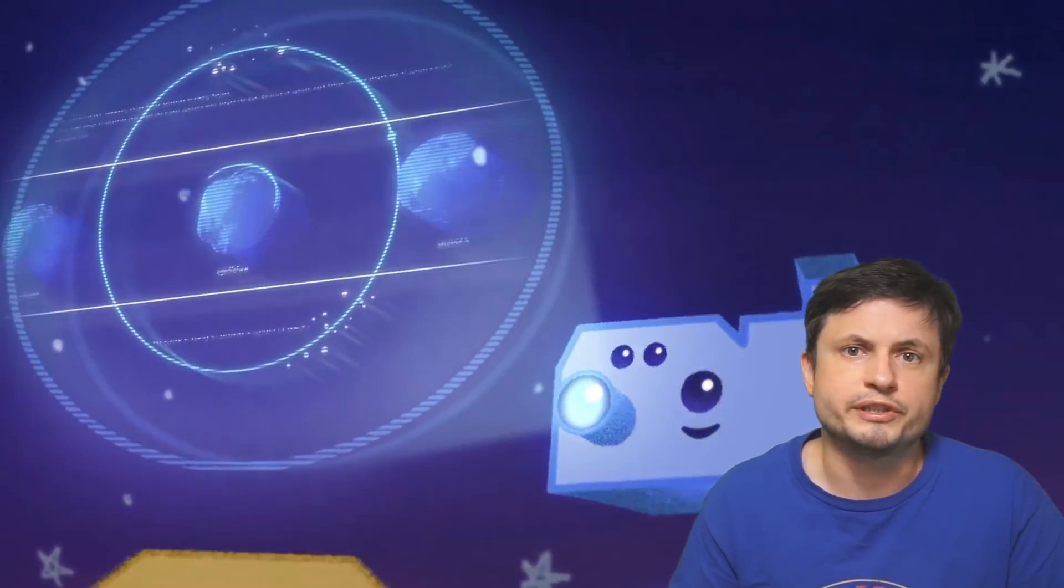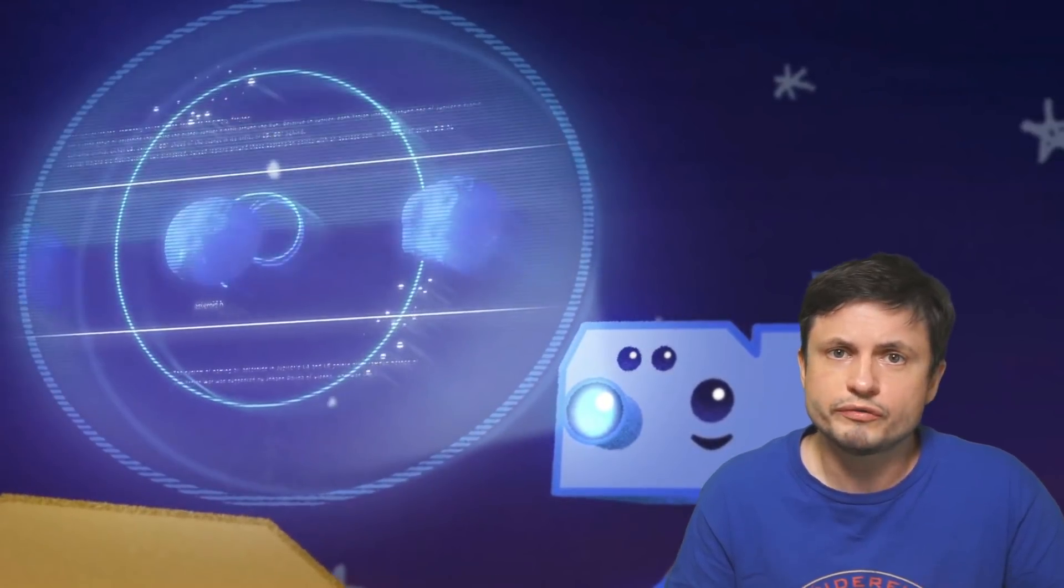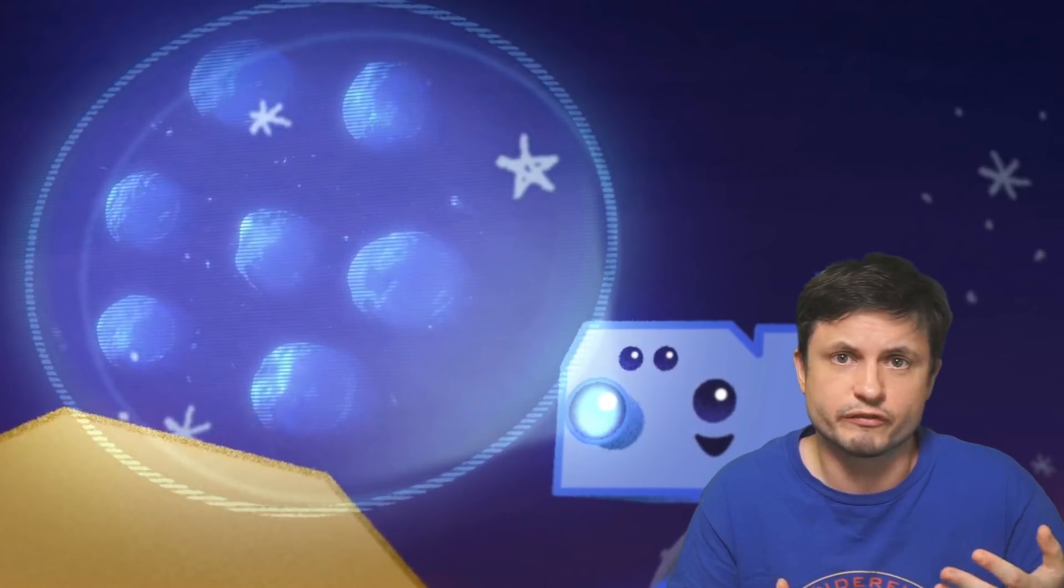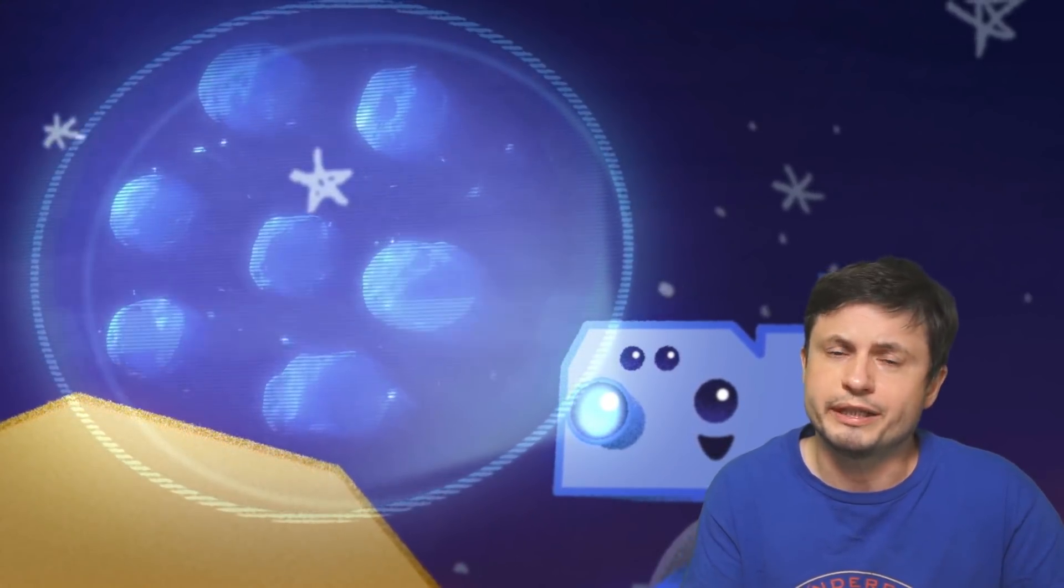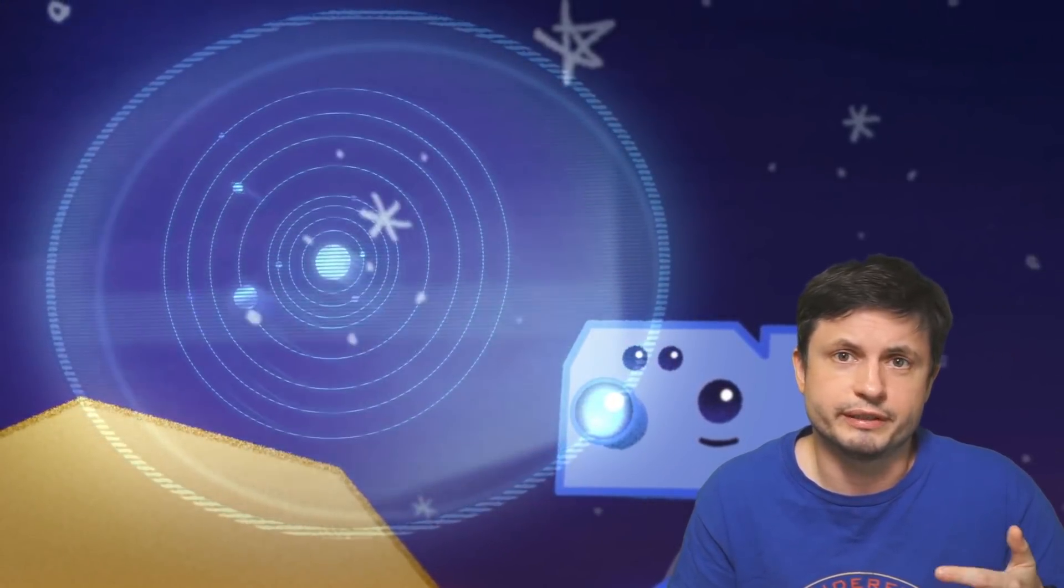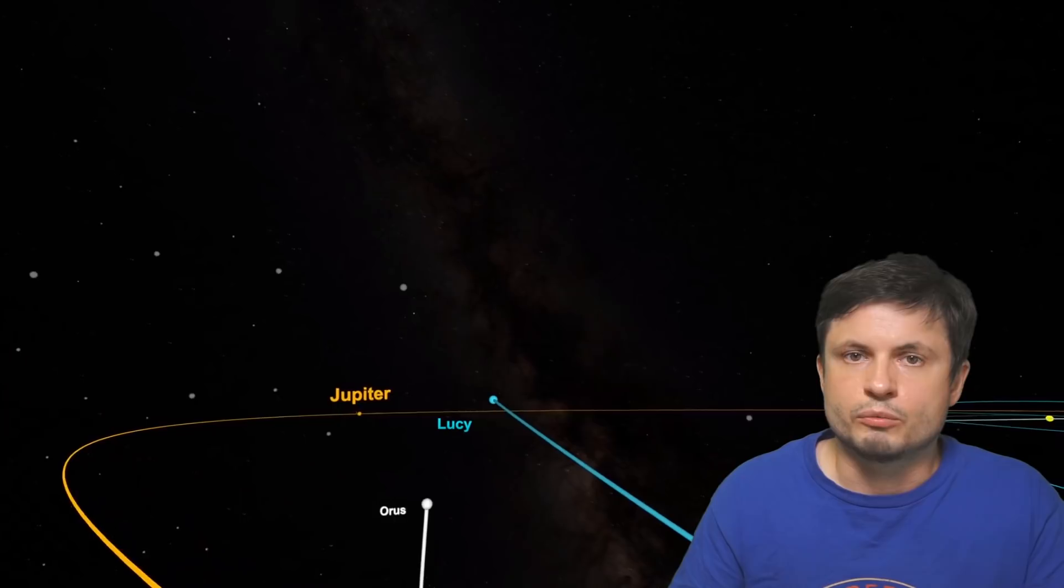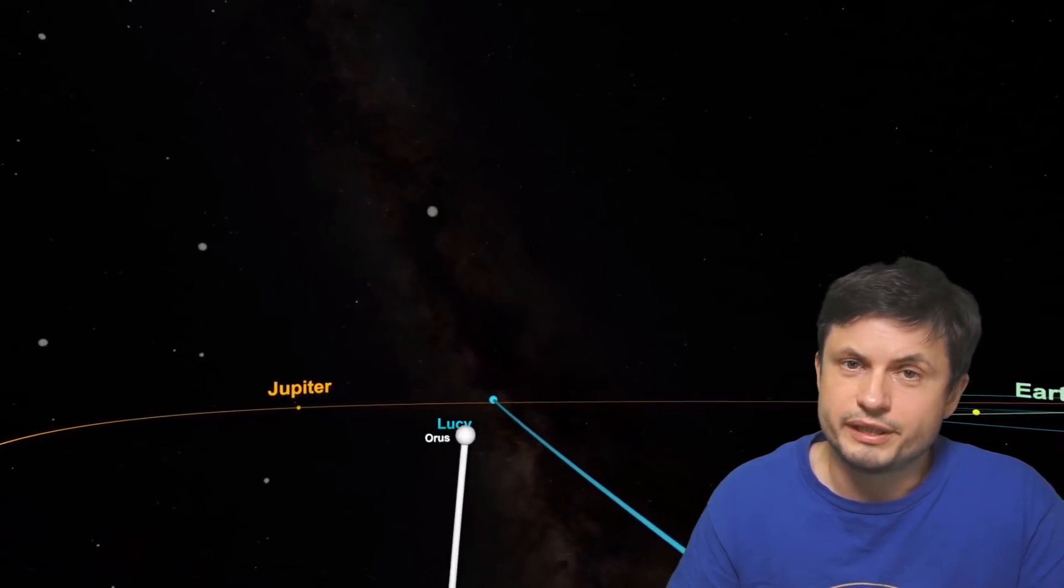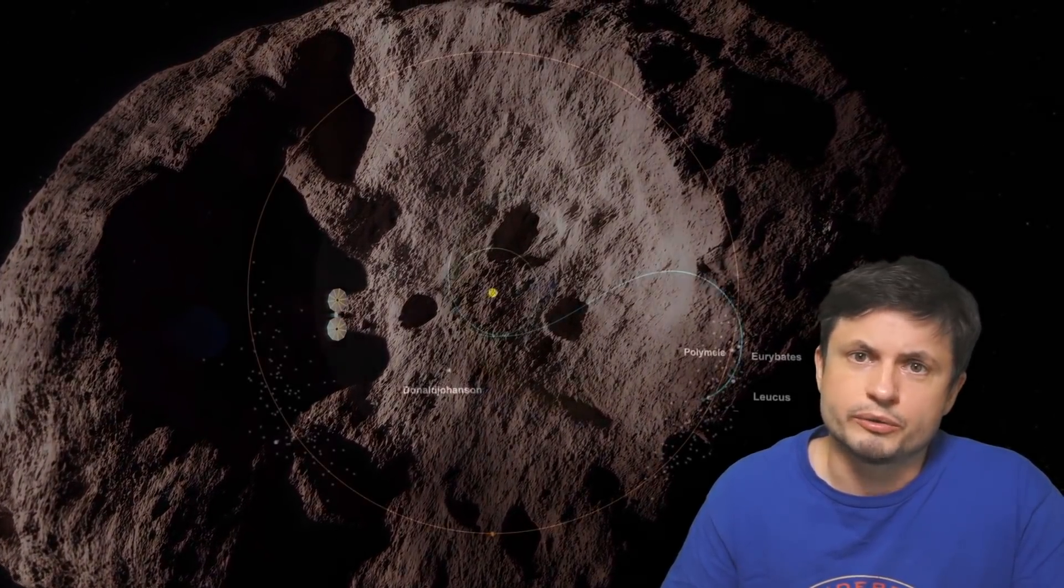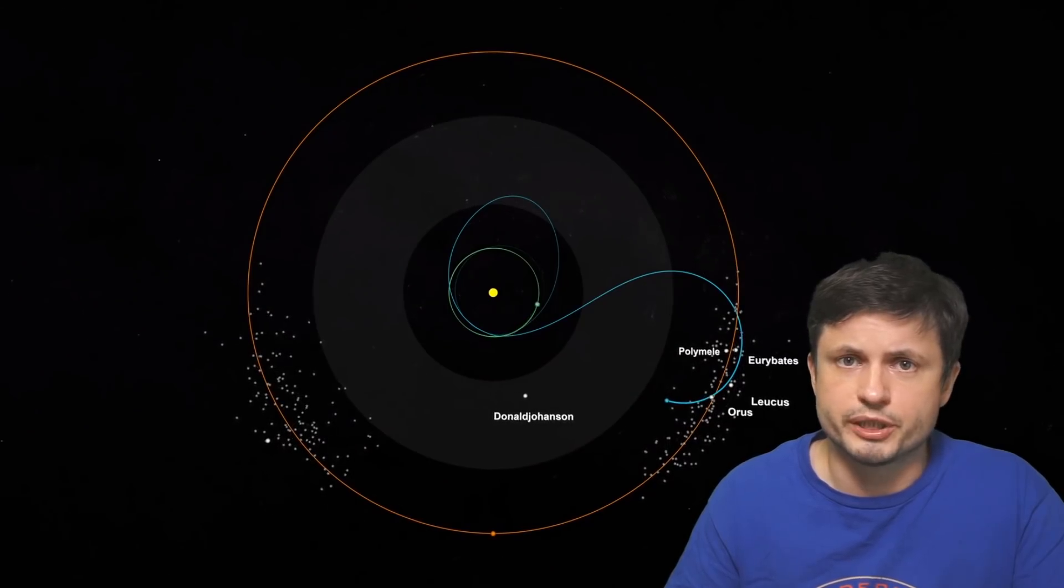But it's not going to be visiting these objects for too long. All of these are going to be flybys, where Lucy is going to get a chance to take a lot of snapshots, a lot of pictures, and these pictures will then be used to analyze the structure, the composition, and of course the density and the mass of these objects. With pretty much all of these flybys being at extremely fast speeds, several kilometers per second, and usually at a distance of around 1000 kilometers away from the object.